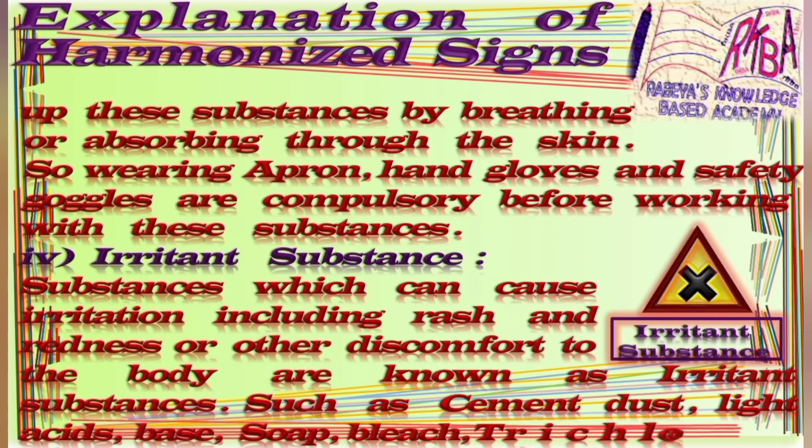The fourth one is irritant substances. The sign of irritant substances contains a figure of a cross mark. Substances which can cause irritation, including rash, redness, or other discomfort to the body are known as irritant substances. Examples include cement dust, light acids, bases, soaps, bleach, and trichloroethylene.